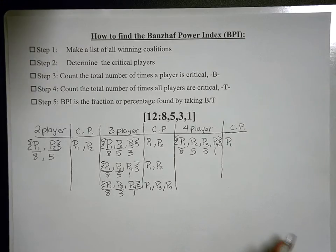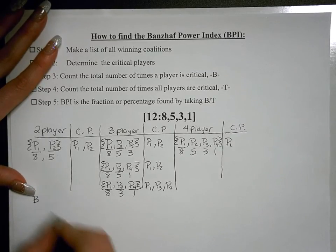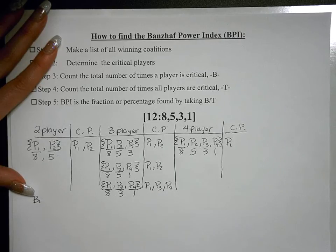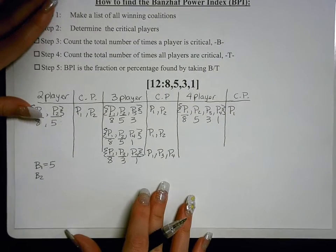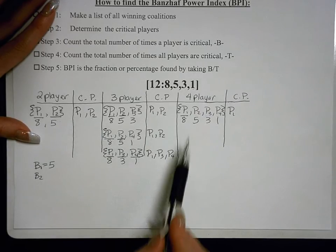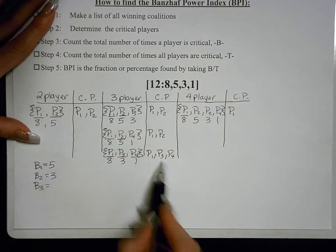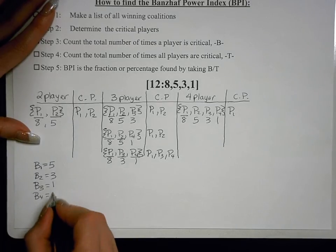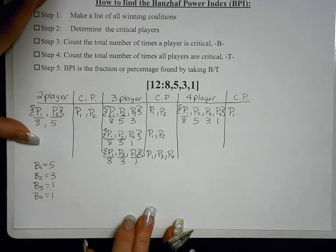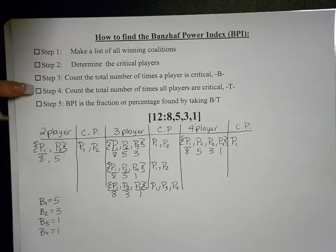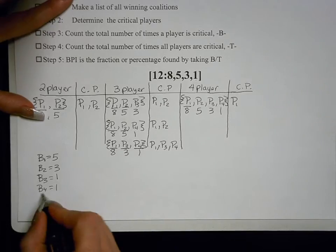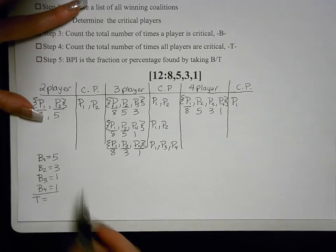We've determined all the critical players. Now step three: count the total number of times each player is critical using symbol B. B sub one — player one has been critical: one, two, three, four, five times, so B₁ equals 5. Player two has been critical three times, so B₂ equals 3. Player three has been critical once: B₃ equals 1. Player four has been critical once: B₄ equals 1. The total T is five plus three plus one plus one, which equals 10.